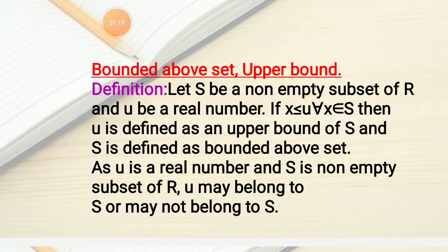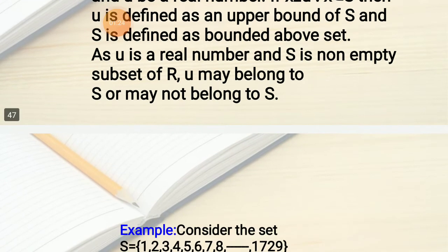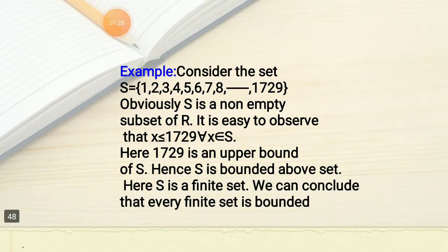Let us see one example to understand upper bound and bounded above set. Consider the set S = {1, 2, 3, 4, 5, 6, 7, 8, ..., 17, 29}. Note that 1729 is a famous Ramanujan number, which can be written as 9³ + 10³ and also as 12³ + 1³ — it is the smallest number expressible as the sum of two cubes in two ways. Ramanujan discovered this number, and 1729 is called a Ramanujan number.